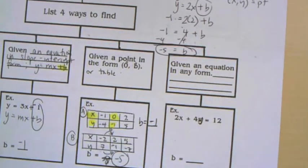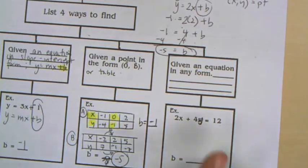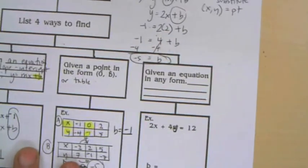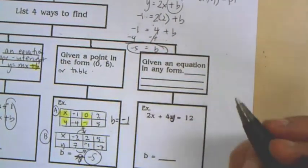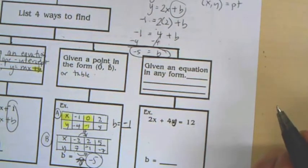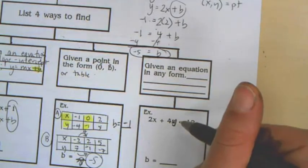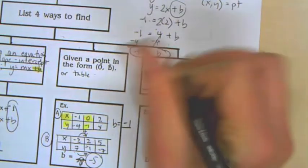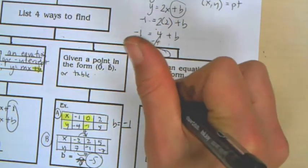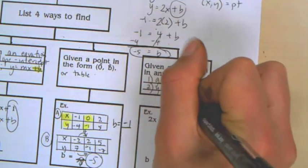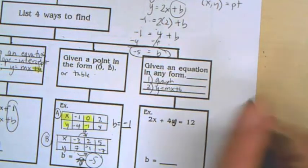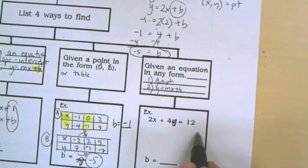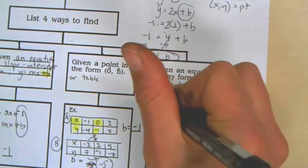There's my negative 5 down here for this one. The last one is you can be given an equation in any form wanting to find the y-intercept. You could graph this out, that's one option. You could put this in y = mx + b form using a little bit of algebraic manipulation - subtracting 2x from both sides, then dividing by 4 across everything.